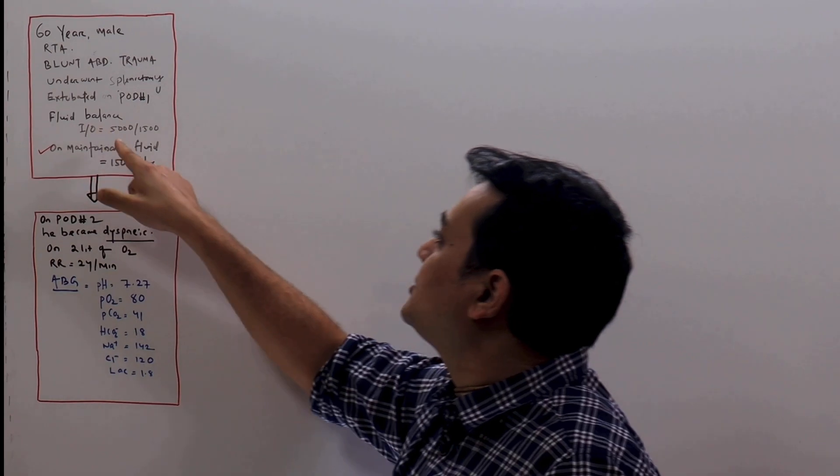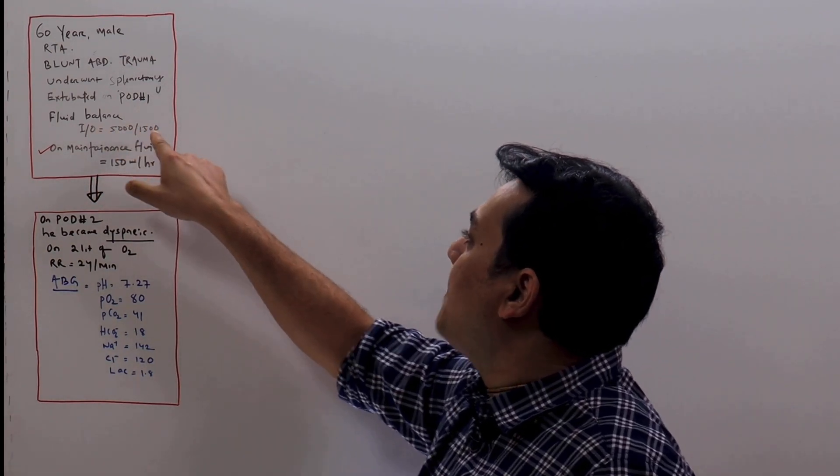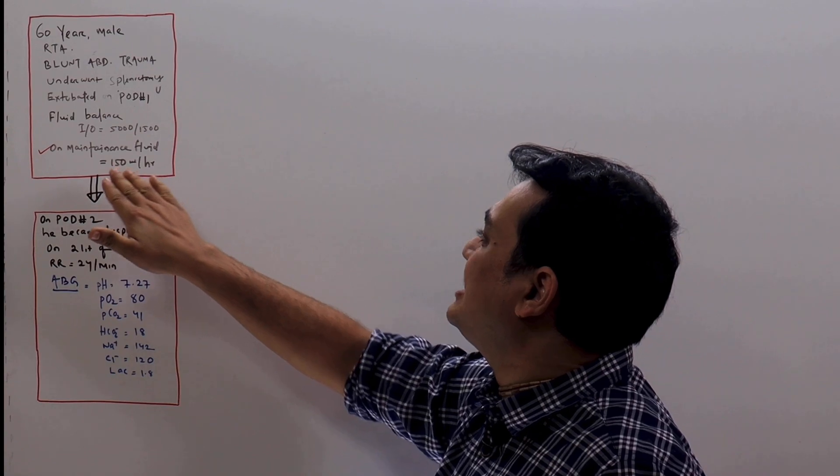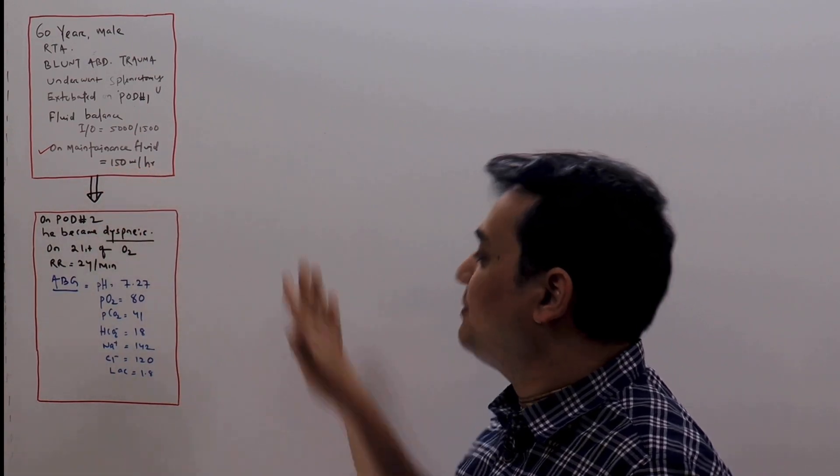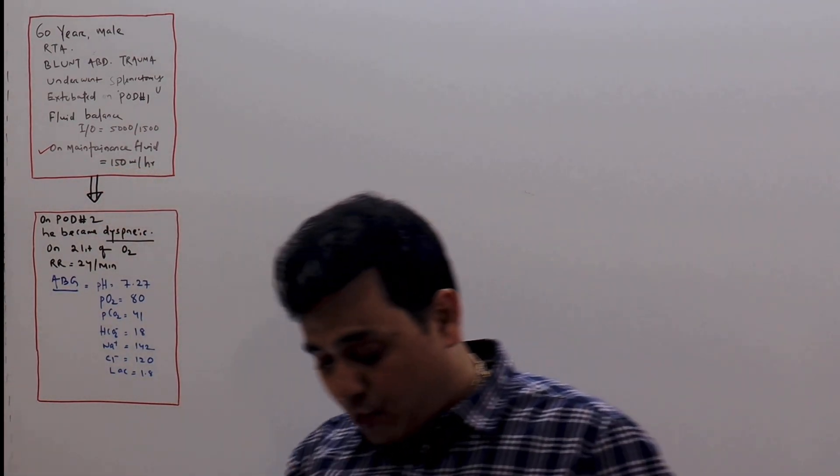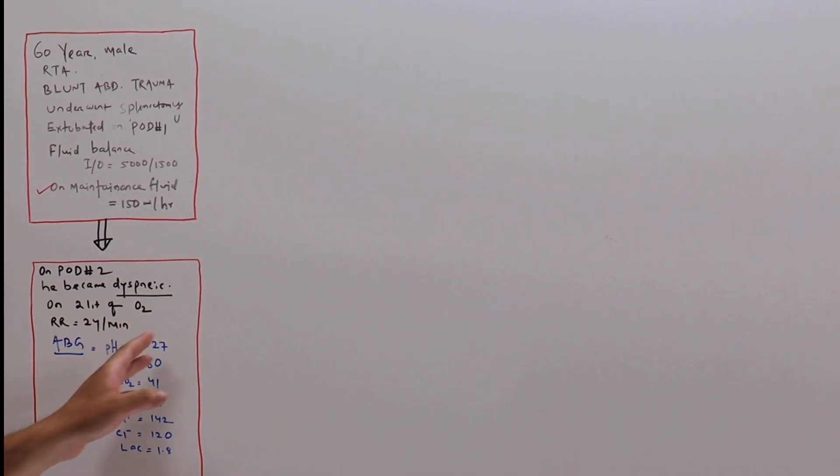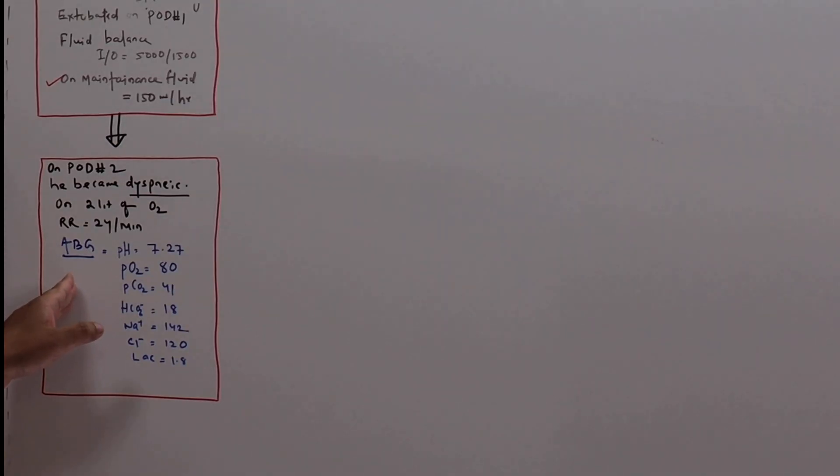By this time, the cumulative fluid balance was 5 litre upon 1.5 litre. At this present moment, patient is on maintenance fluid 150 ml per hour. But what happened on day 2, he became dyspneic, started on 2 litres of oxygen via nasal cannula, and became tachypneic.